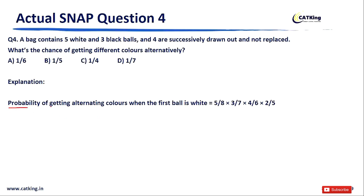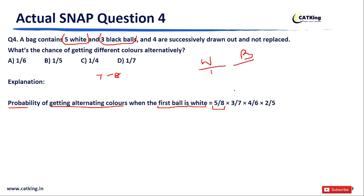Let me help you solve this. Case 1: probability of getting alternate colors when the first ball drawn is white. We have 5 white and 3 black balls, so 8 total. The first probability of selecting a white ball is 5/8. The second draw must be black. Now only 7 balls remain, and we still have 3 black balls, so the probability is 3/7.